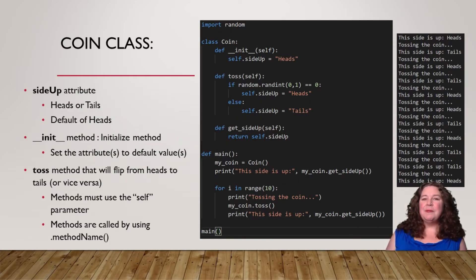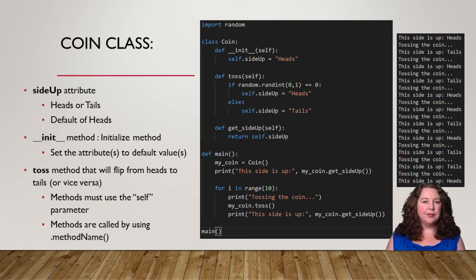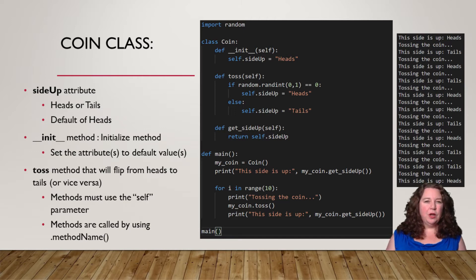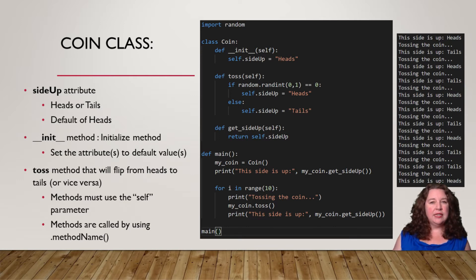Let's look at some actual code. In this case we are creating a class for a coin — a heads or tails coin that you flip to determine if it's heads or tails. We're also going to use random, so we've imported random. We're going to create a class called Coin. This is our object definition header where we say 'class Coin' with a colon because we're starting the class. Remember, everything after the class keyword is going to be indented.